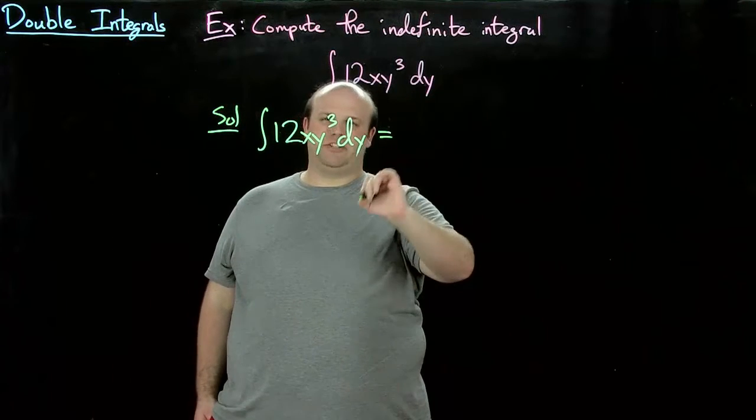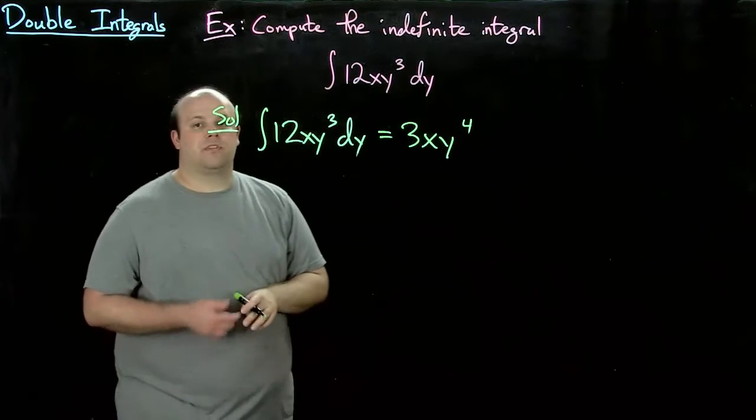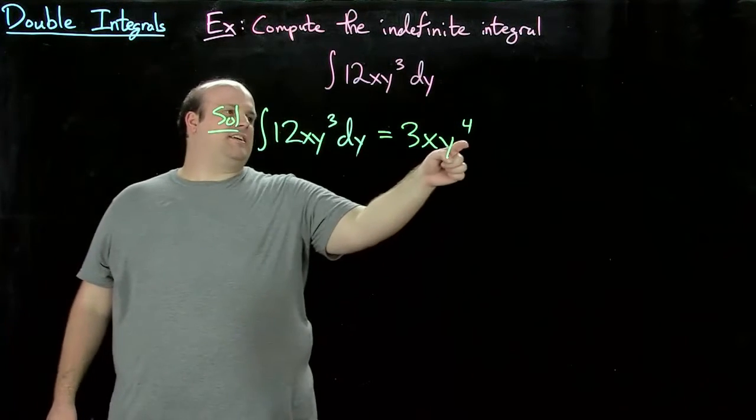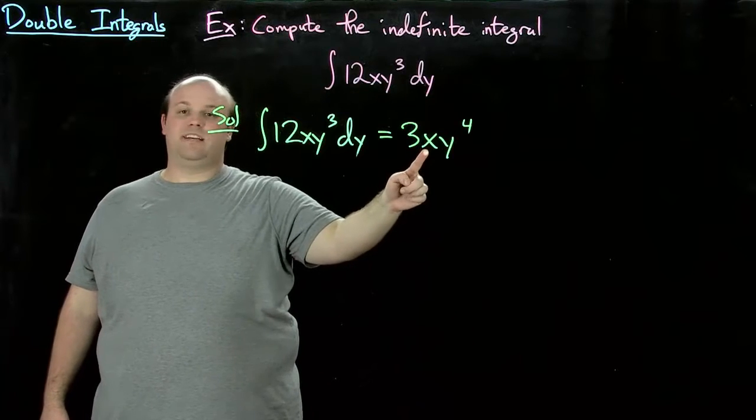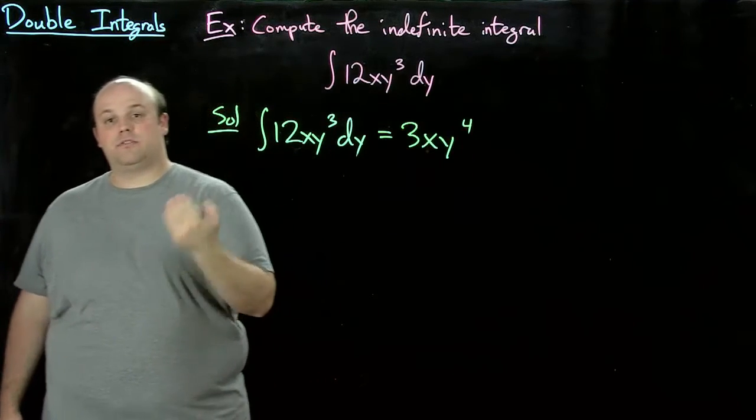So we should get then 3xy to the fourth. All right, because remember if you take the derivative here, it ignores x, the 4 comes out and makes the 12, and then the y to the fourth drops to y cubed.